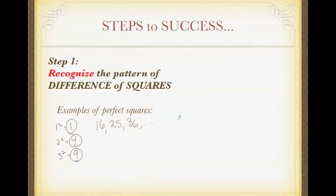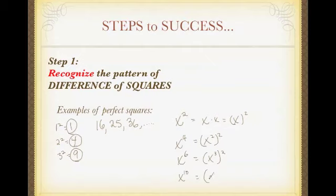The other thing you need to be aware of is that you have a perfect square when an exponent is even. So obviously, x squared is x times x and can be written as x squared. If I have x to the fourth, I can write that as x squared squared. X to the sixth can be written as x to the third squared. Even x to the tenth could be written as x to the fifth squared. But notice if I have one like x to the ninth, I can't write that as x to anything squared.